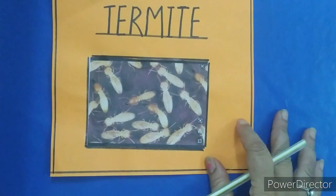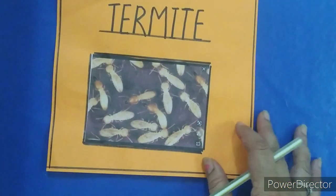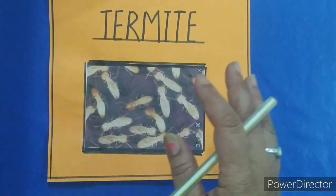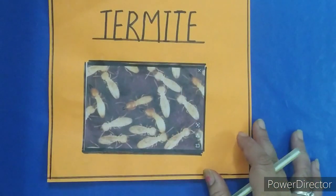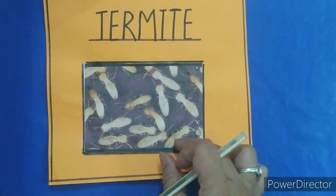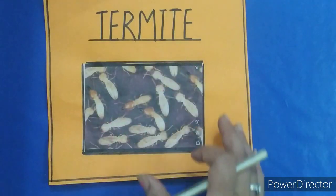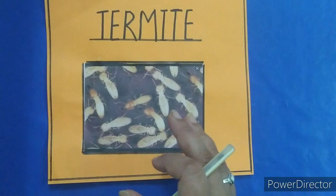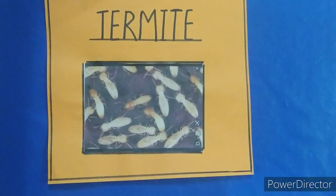Now kids, look at this picture carefully. Do you know about these insects? This is called termite. Termite is a kind of soft white insect that lives in groups. It eats wood and causes a lot of damage to wooden structures.